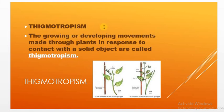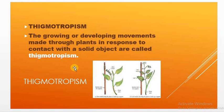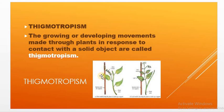The last type is thigmotropism. Thigmo means touch. The growing or developing movements of plants in response to contact with a solid object are called thigmotropism. You have seen this especially in climbers, which develop weak strands called tendrils. When these tendrils touch a hard object they start bending towards it. The development of tendrils is an example of thigmotropism.